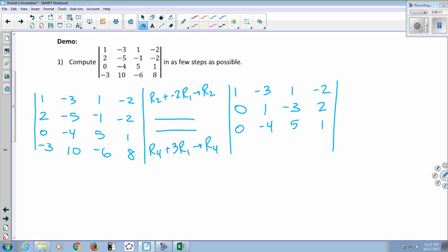So then my new row four, I'm going to take row four and add three times row one. So three times one is three, plus negative three is zero. Three times negative three is negative nine, plus ten is one. Three times one is three, minus six is negative three. Three times negative two is negative six, plus eight is two.